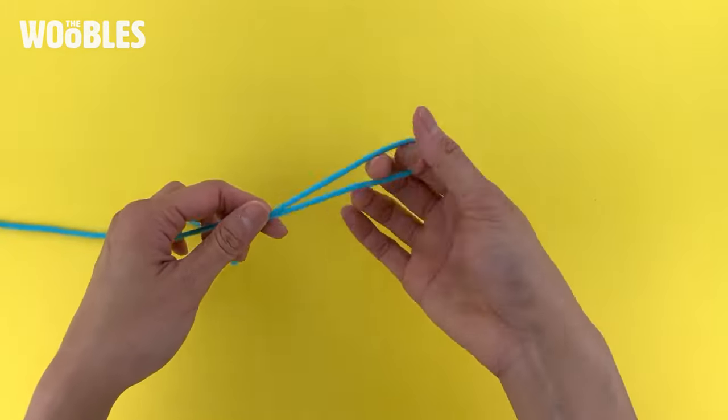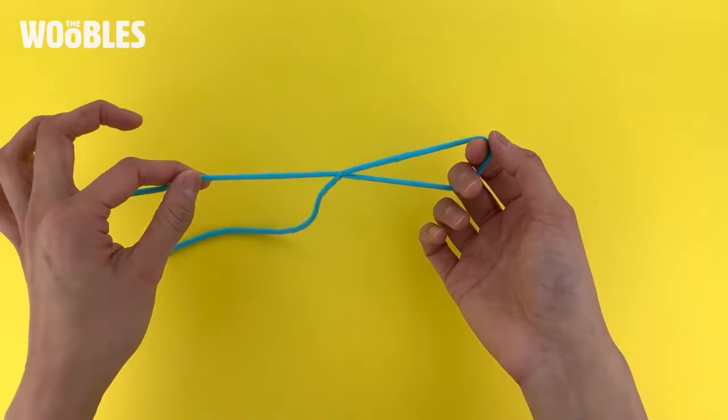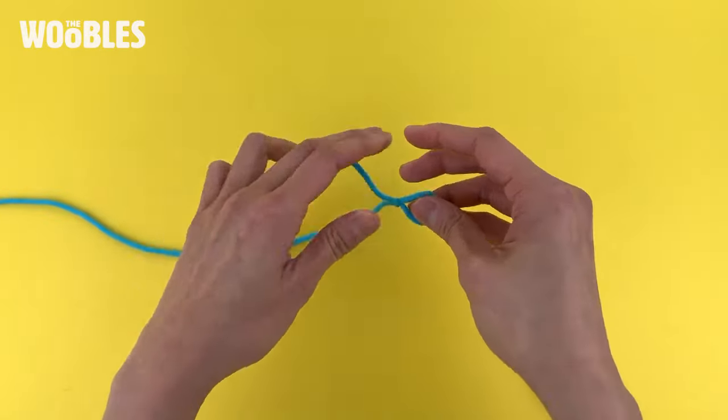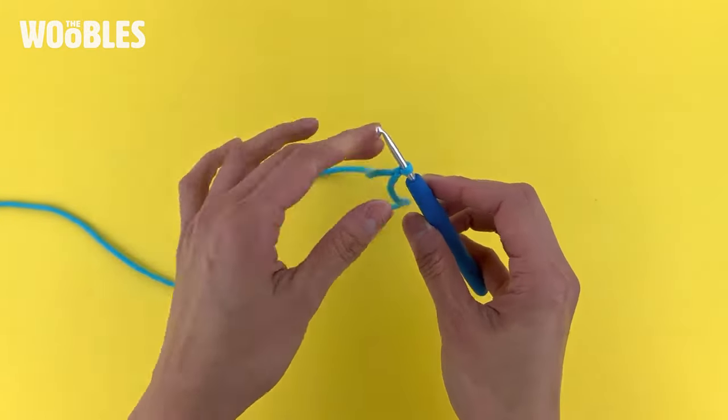You might be looking at this and wondering why your loop is so large, don't worry. The magic of a slip knot is that if you pull on the yarn connected to the yarn ball, it makes this loop smaller. You want to make that loop as small as the tip of your hook.